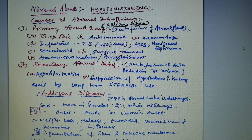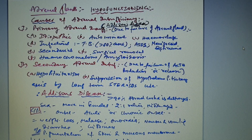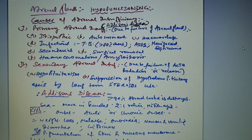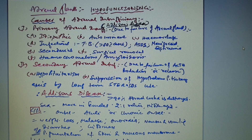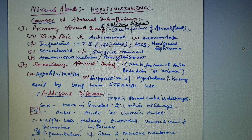The adrenal cortex and the hormones secreted by it are mainly regulated by the hypothalamo-pituitary-adrenal axis. If glucocorticoids from the zona fasciculata are low, it stimulates the hypothalamus and pituitary to secrete releasing hormone or ACTH. Mineralocorticoids from zona glomerulosa are mainly regulated by the renin-angiotensin system, depending on sodium and water levels.